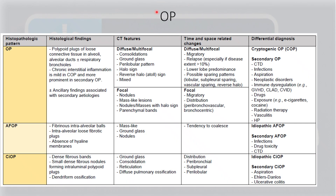On histopathology, they have classified OP as classical OP, acute fibrinous organizing pneumonia, and cicatricial organizing pneumonia. They have given their differentials as idiopathic and secondary in all three categories. In classical OP, if it is cryptogenic you will see mild chronic interstitial inflammation, while secondary causes show more prominent inflammation. Hyaline membranes are absent in acute fibrinous organizing pneumonia. In cicatricial organizing pneumonia, there will be dense fibrous bands and dendriform ossification.